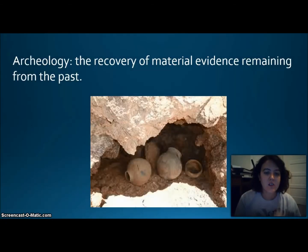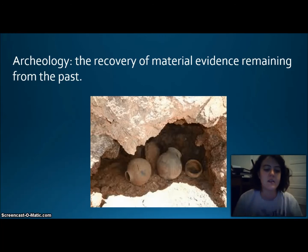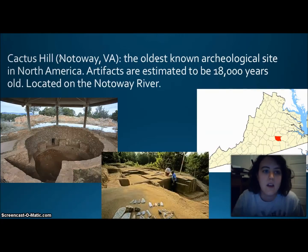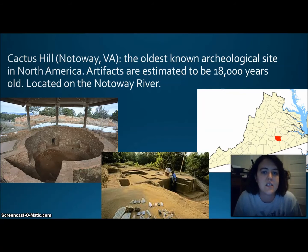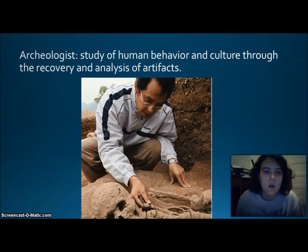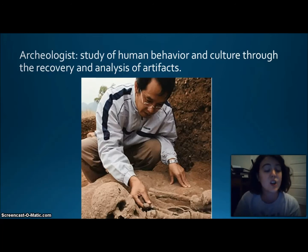Moving on to Native Americans. We have archaeology — the recovery of material evidence remaining from the past. We looked at Cactus Hill, located in Nottaway, Virginia. It's the oldest known archaeological site in North America, with artifacts estimated to be 18,000 years old. An archaeologist is the person who studies human behavior and culture through the recovery and analysis of artifacts, and they learn a great deal from everything that's left behind.